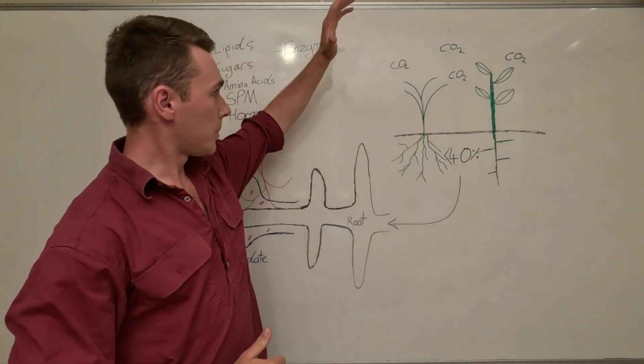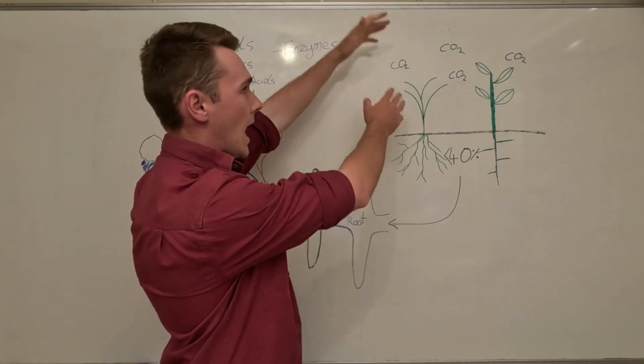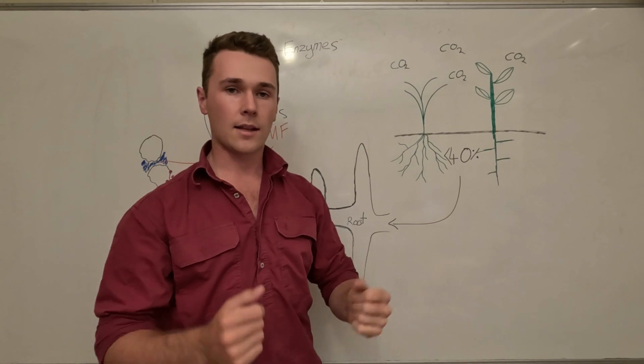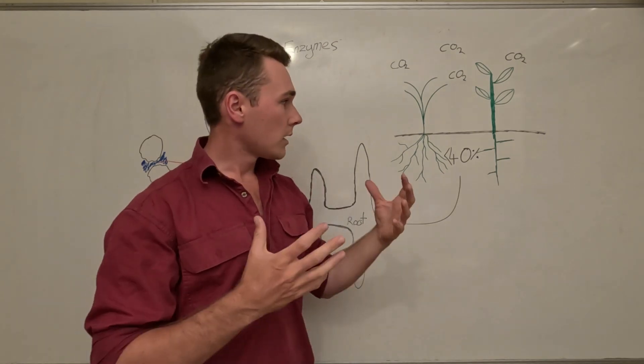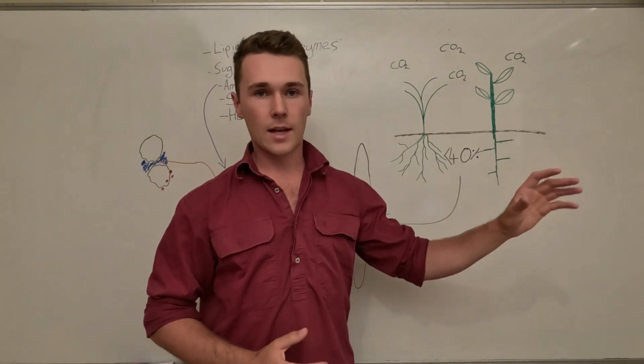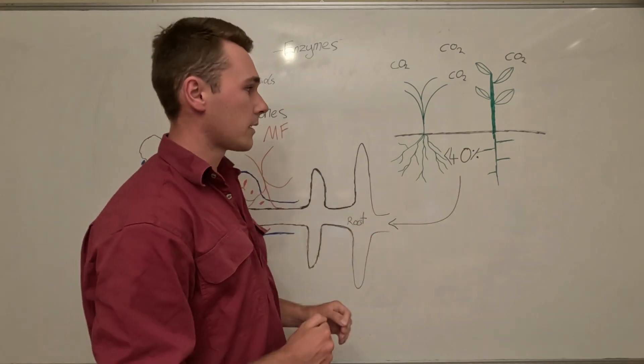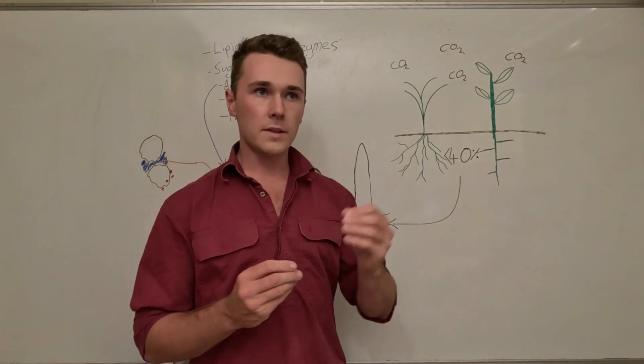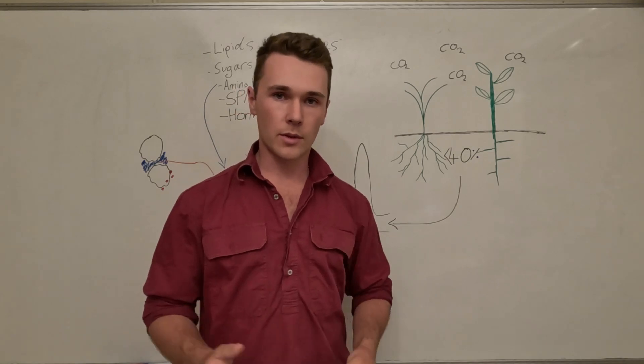So let's start right at the beginning. Plants photosynthesize - they take carbon dioxide out of the atmosphere and they fix it into sugars. We know that and I've made a video about it in the past so go check that out if you want to understand more of that.